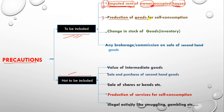The second point is production of goods for self-consumption. If goods have been produced for self-consumption, they are to be added. Why? First, their production happened in the current year, so current year production must be added. Second, if you had not self-consumed these goods, you would have had to buy them from the market — so their market value must be added accordingly.